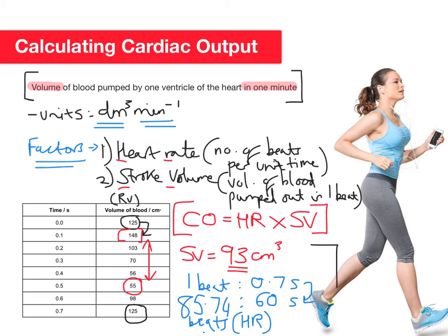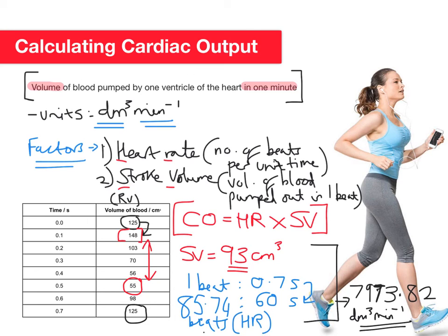Now I have heart rate and stroke volume. To get cardiac output, I simply multiply: 93 × 85.74 = 7,973.82 dm³ per minute. The number you get may differ slightly depending on where you round when calculating heart rate, but that's all there is to it.